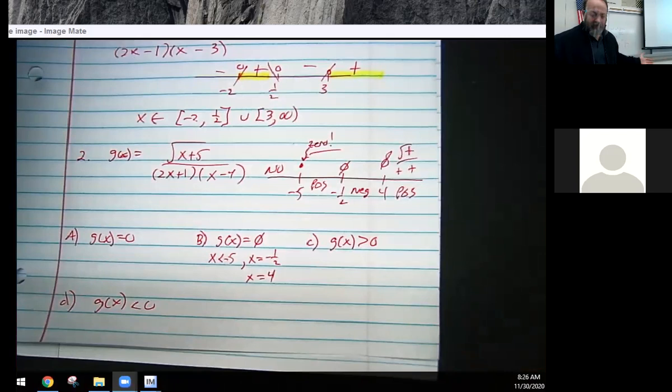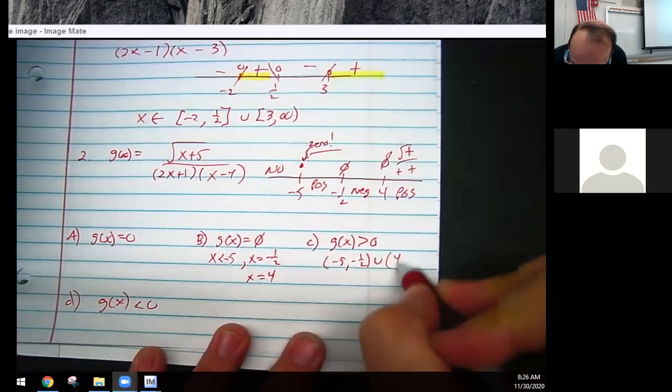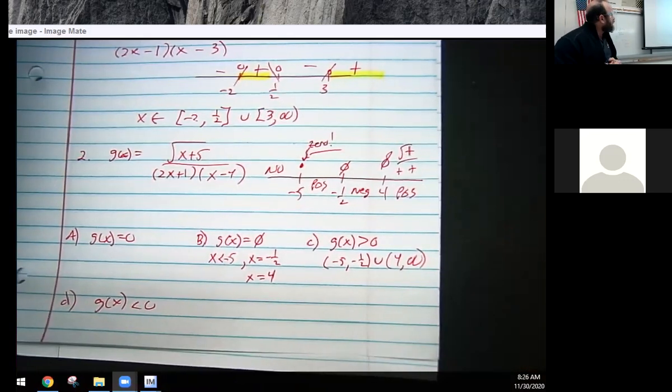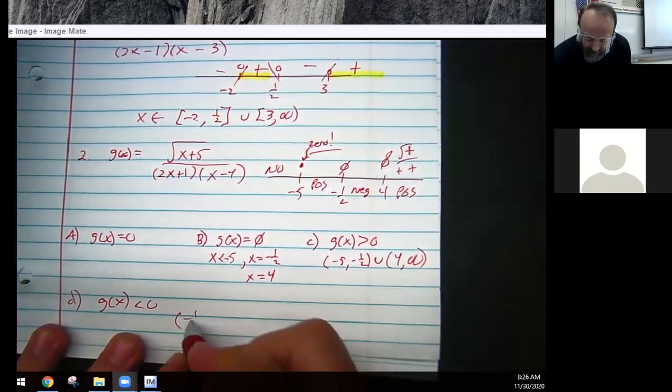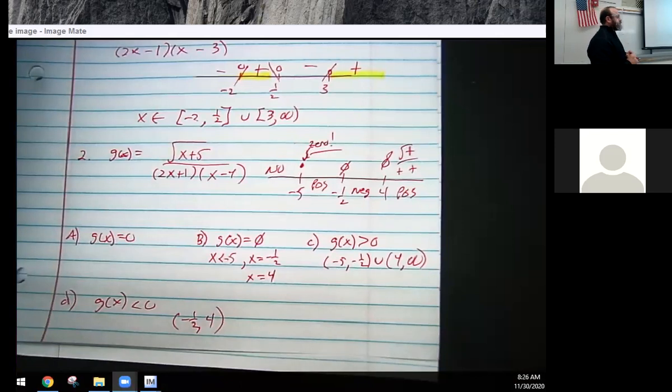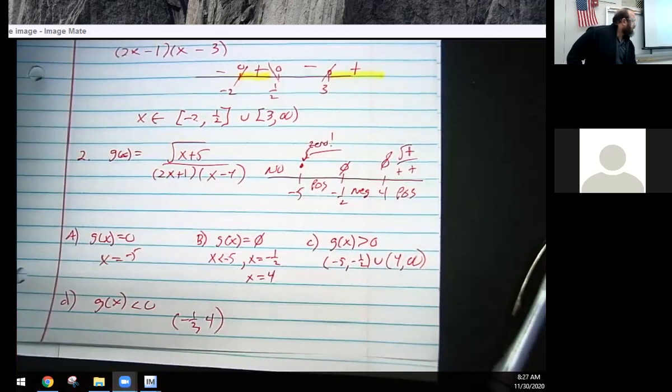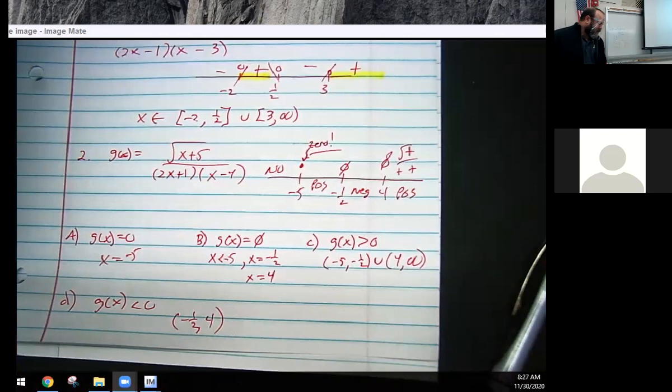So can we finish the story? Where is the graph positive? Oh, well that only happens from negative five to negative one half and then from four to infinity, right? Where is it negative? That's only from negative one half till four. And where is it equal to zero? At negative five. You got it. That's the story. What do you guys think? Does that seem like crazy harder than what we've done? It doesn't seem like it should be too much worse than what we have done in the past. So, all right. So we're going to go ahead and do one more little thing.